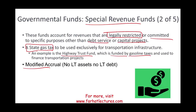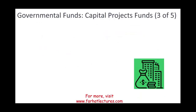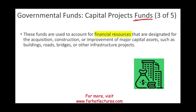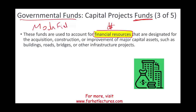An example of a special revenue fund is a highway trust fund, funded by gasoline taxes and used to finance transportation projects. All governmental funds use modified accrual. The third type is the capital project fund — used to account for financial resources, meaning money, not buildings. Because governmental funds use modified accrual, they don't track long-term assets like buildings. Capital project funds track the money designated for the acquisition, construction, or improvement of capital assets such as buildings, roads, and bridges.